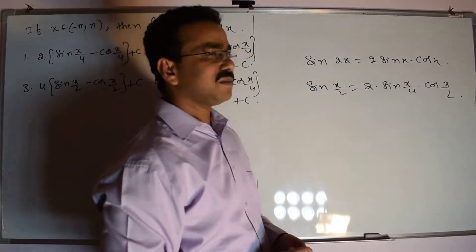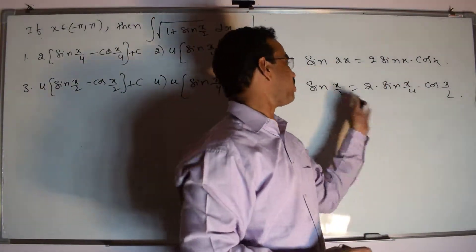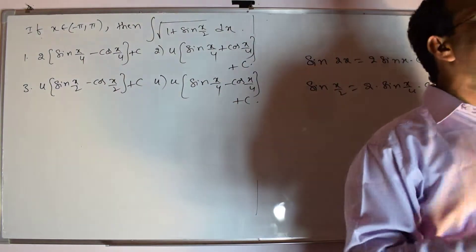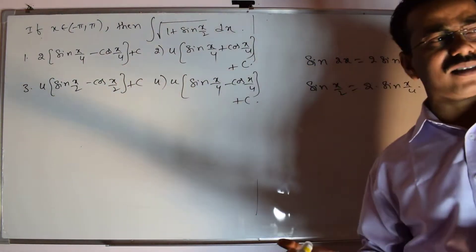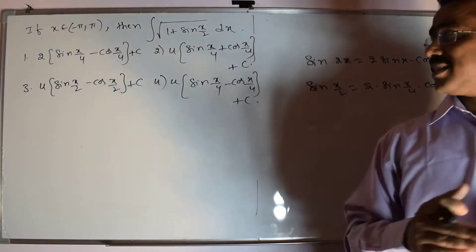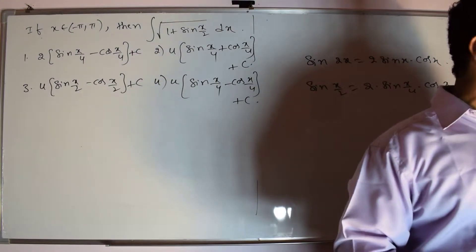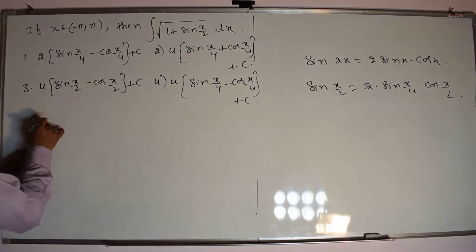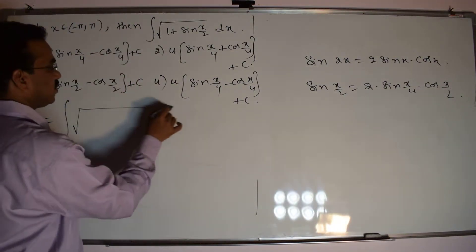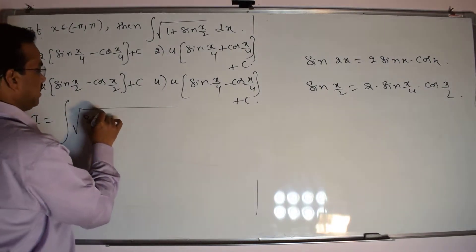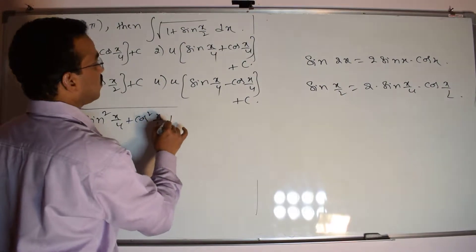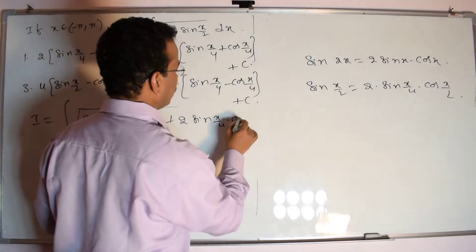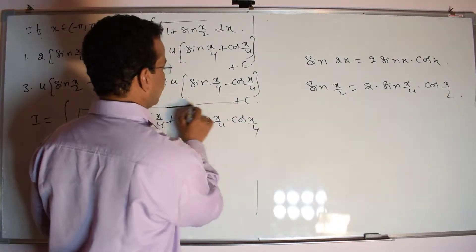Here x is replaced by x/2, then x is replaced by x/4. We can apply this formula. Next, the 1 in 1 plus sin(x/2) can be written as sin²(x/4) plus cos²(x/4), using the Pythagorean identity. Now let me write the given integral I equals the integral of square root of sin²(x/4) plus cos²(x/4) plus 2·sin(x/4)·cos(x/4) dx.